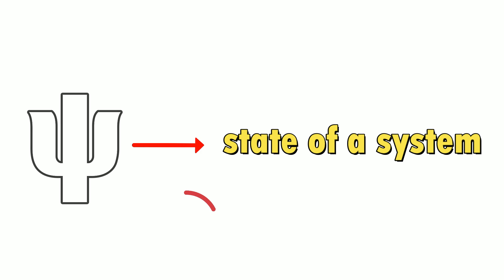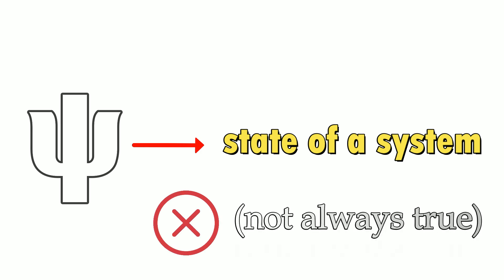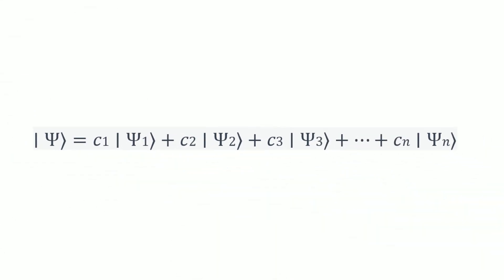Before talking about the collapse thing, one thing you should understand is that it is not necessary that the state of a system is always represented by a single wave function only. Rather, it can be represented by two or more wave functions like this.